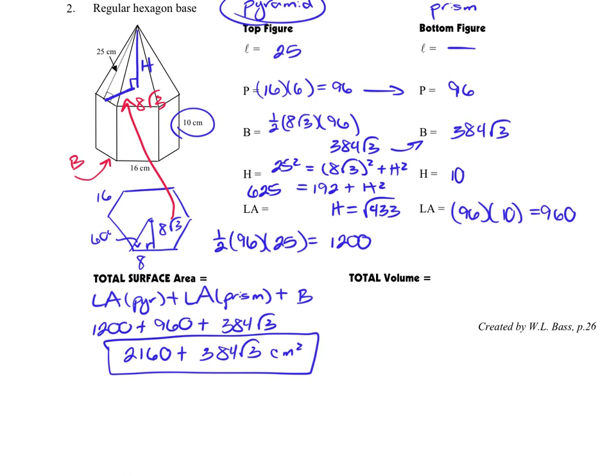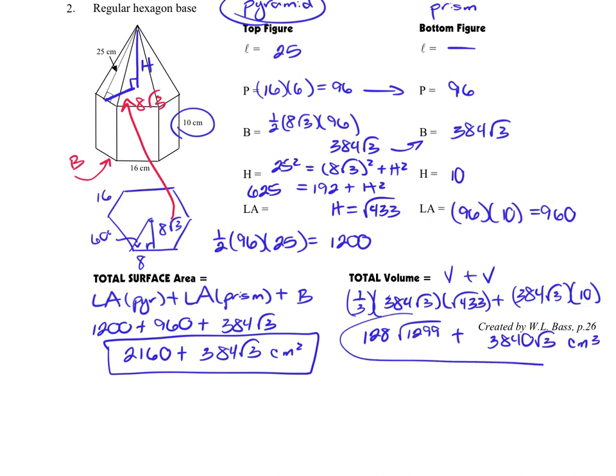Volume is going to be pretty simple because we just need to add the two volumes together. So 1 third, the area of the bottom base, 384 square root of 3, times the height of the pyramid. That's that gross square root of 433. Then we're going to add to that the area of the bottom base, times the height of that prism. Cleaning all this up, we're going to get 128 because we're going to have our 1 third of 384, and then we're going to multiply our two radicals together, which will not simplify and gives us 128 square root of 1,299 plus 3,840 square root of 3 centimeters cubed. So the answer isn't necessarily attractive, but it's not particularly difficult to get to it.